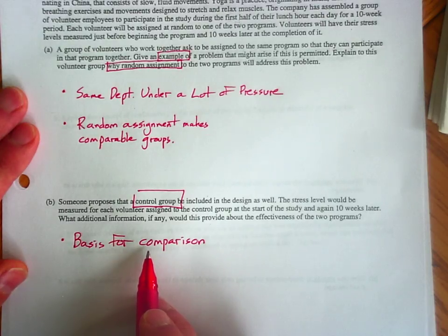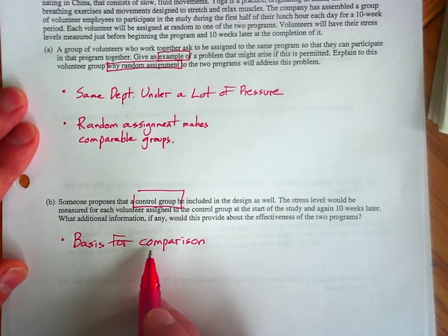On the flip side, let's say that these treatments are being tried in the summertime. It may very well be, if this company isn't as busy during the summer, that stress level is falling in general during the summer. The control group would give us a basis for that comparison.